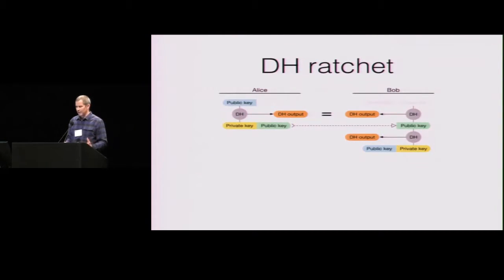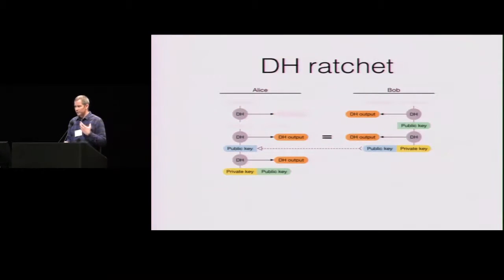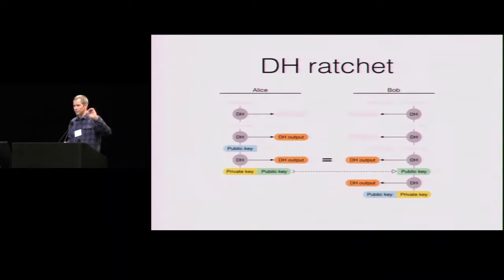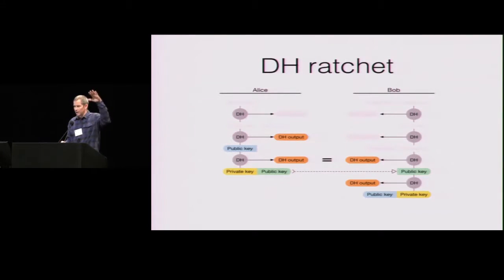OTR also pioneered the idea of a ratcheting protocol — after the key agreement stage, you just continually update your keys as you send messages, so you're continually upgrading your forward secrecy as you communicate. Both parties, whenever they send a message, send a Diffie-Hellman public key. When they receive the other person's public key they replace theirs, and their counterparty does the same. There's just a ping-ponging of public keys which defines an upgrading sequence of new Diffie-Hellman secrets used for encryption — a nice way to inline an upgrading of forward secrecy as you communicate.